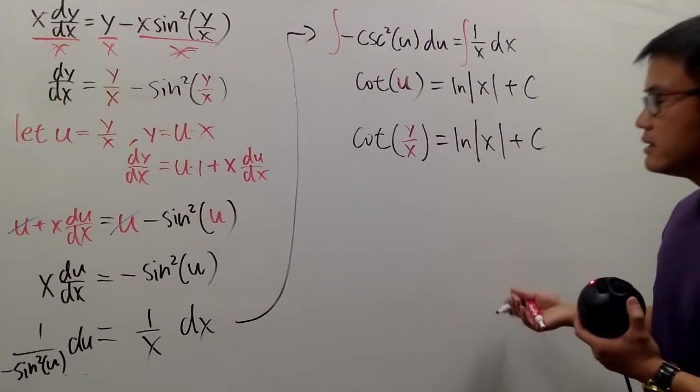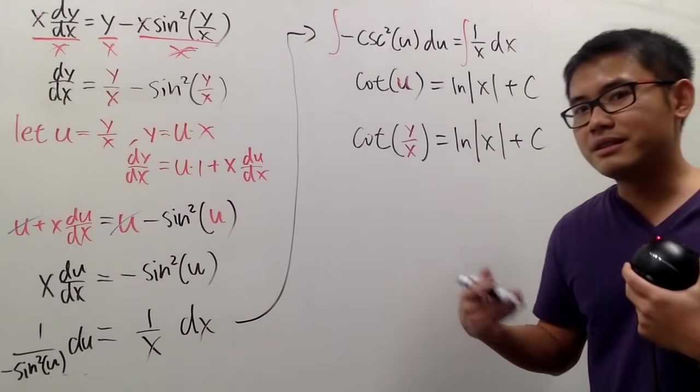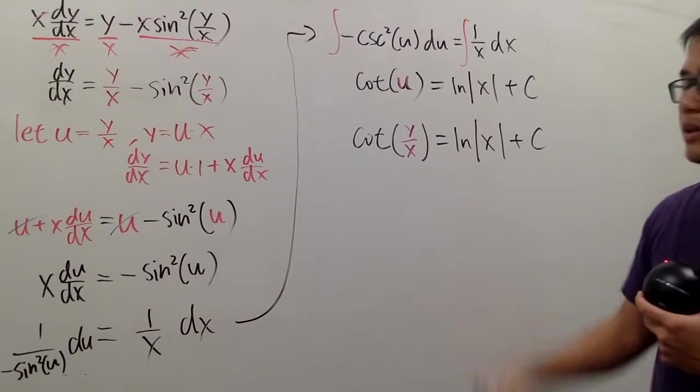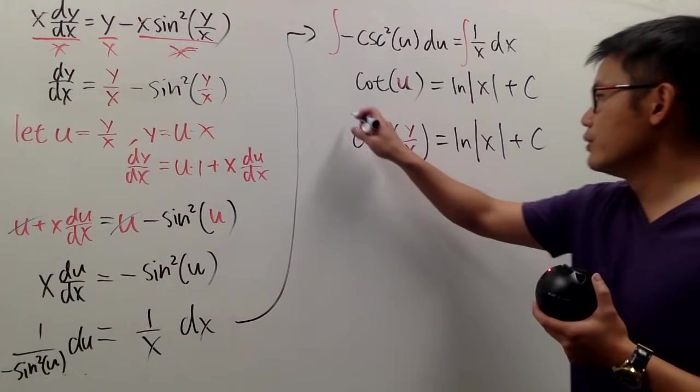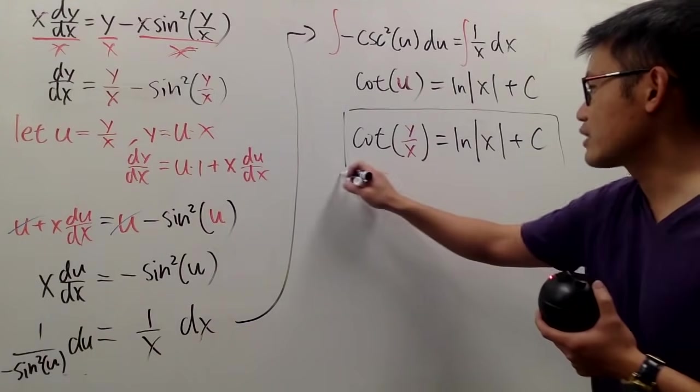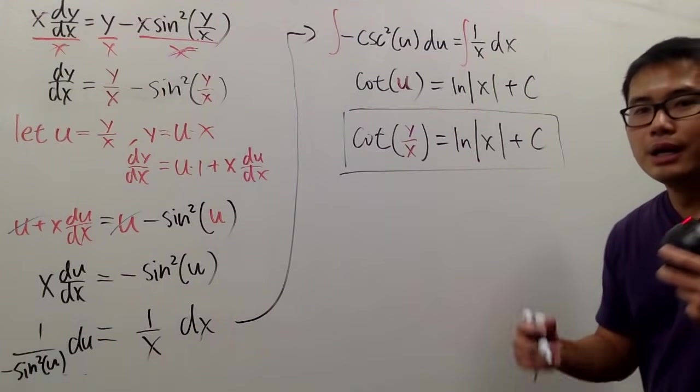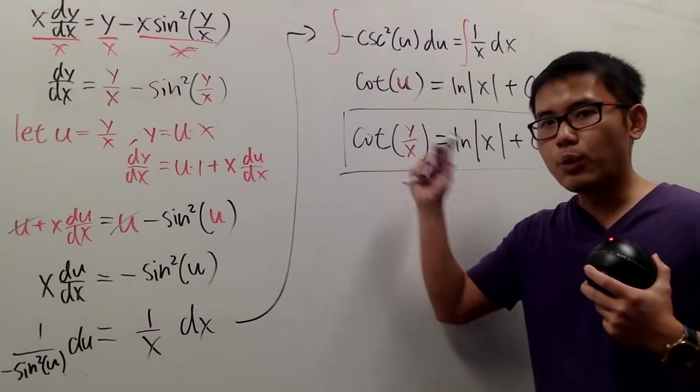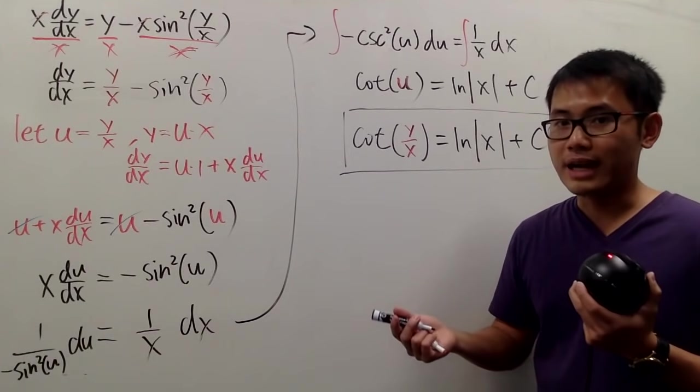Are we done? Yes, if you are okay with implicit solution, meaning you don't want to get y by itself. So you can box this. This is actually legitimate. But it's actually not bad to get y by itself in this case, so we'll also do that as well.